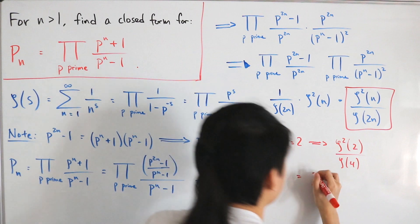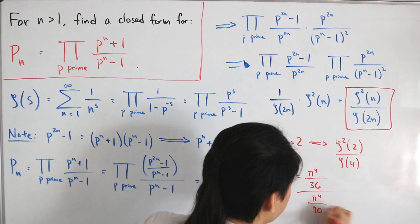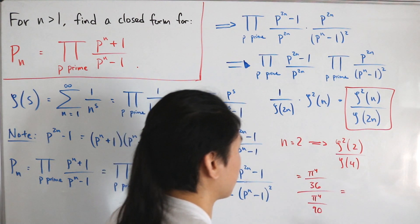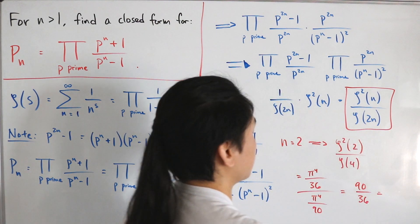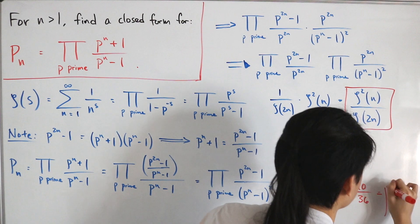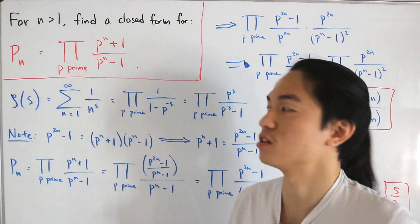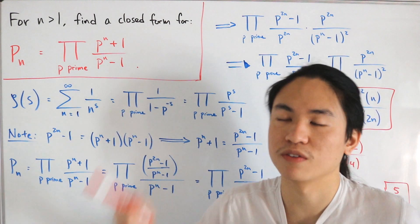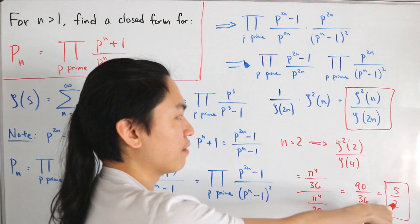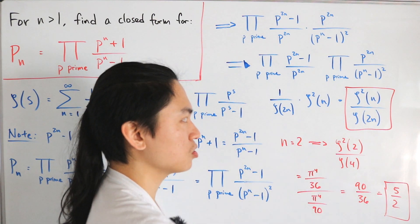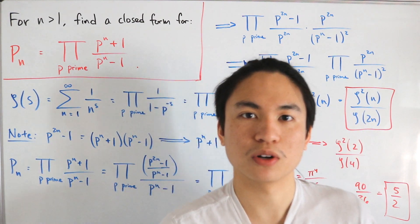So we have (π⁴/36) divided by (π⁴/90). The π⁴ terms cancel, leaving 90 divided by 36, which reduces to 5 over 2. This confirms the closed form works for the n equals 2 case, matching the result from the previous video. That validates our expression, and that's pretty cool.